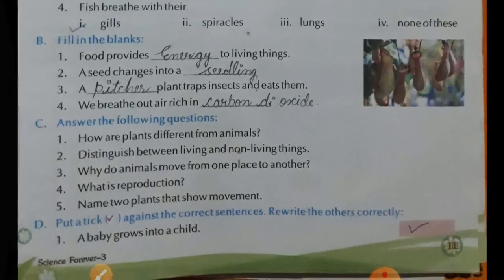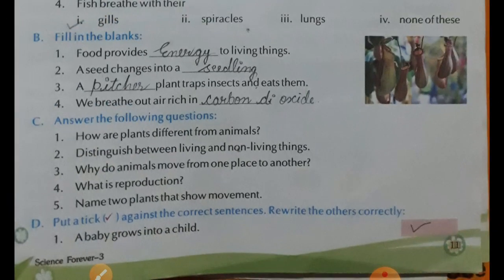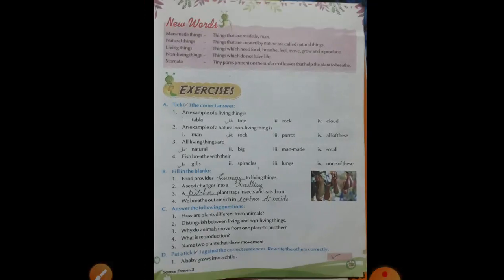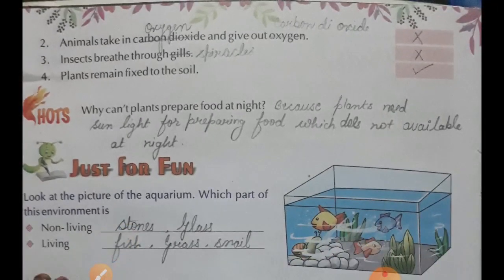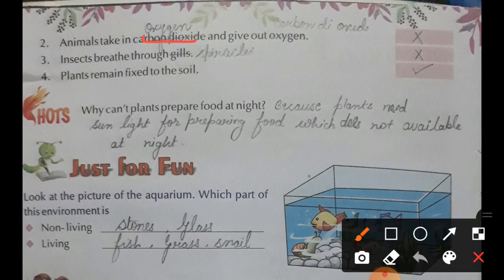Now come to Exercise D. Put a tick against the correct statement. First: a baby grows into a child — correct. Now on the next page: animals take in carbon dioxide — this is wrong. Animals take in oxygen and give out carbon dioxide. So here you have to cut carbon dioxide and write oxygen, and cut oxygen and write carbon dioxide.